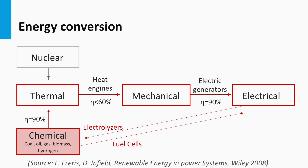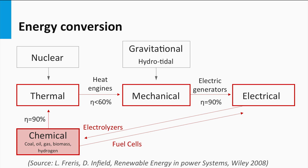Another route of making electricity is based on an alternative fuel: nuclear energy. Nuclear energy is the energy generated in nuclear fission reactions, and generates heat as well. This heat can be converted into electricity using the just-introduced heat engines and electric generators.